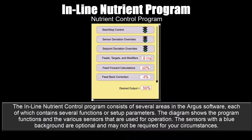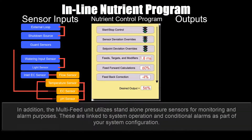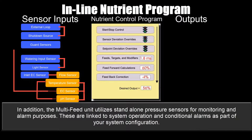The inline nutrient control program consists of several areas in the Argus software, each of which contains several functions or setup parameters. The diagram shows the program functions and the various sensors used for operation. Sensors with a blue background are optional and may not be required for your circumstances. The multi-feed unit utilizes standalone pressure sensors for monitoring and alarm purposes, linked to system operation and conditional alarms as part of your system configuration.